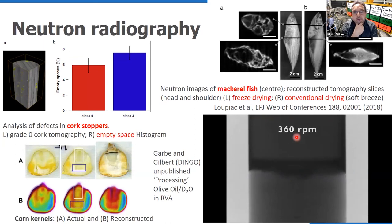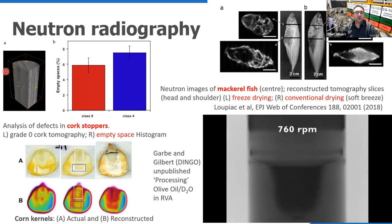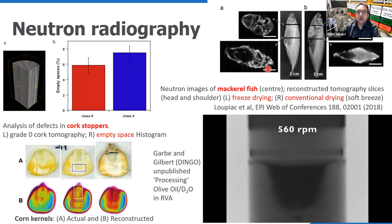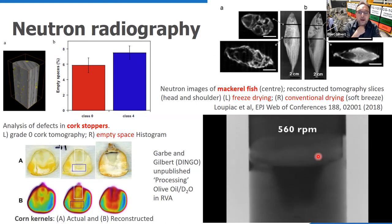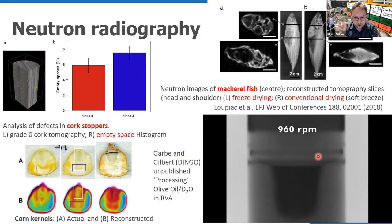Finally, some neutron radiography: it's being used to look at the internal structure of cork, important in the wine industry; to compare freeze drying and conventional drying methods; and to look at corn kernels under different drying methods. We also collected data on the DINGO neutron radiography beamline, looking inside a small-scale food process — images taken inside a Rapid Visco Analyzer, which I'll talk more about shortly.